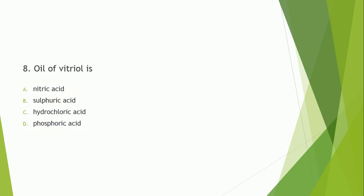Question number 8: What is oil of vitriol called? The correct answer is option B — sulphuric acid is called oil of vitriol.